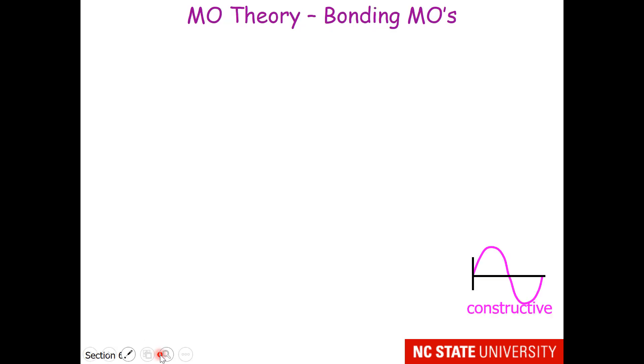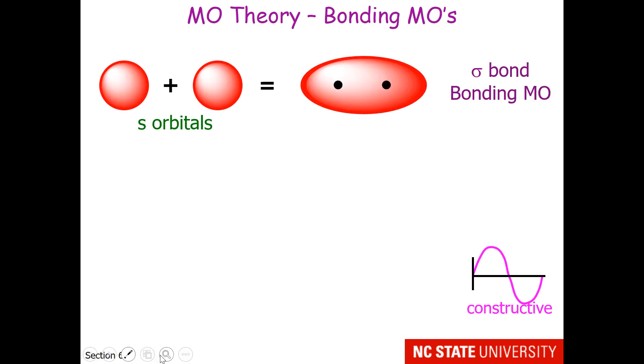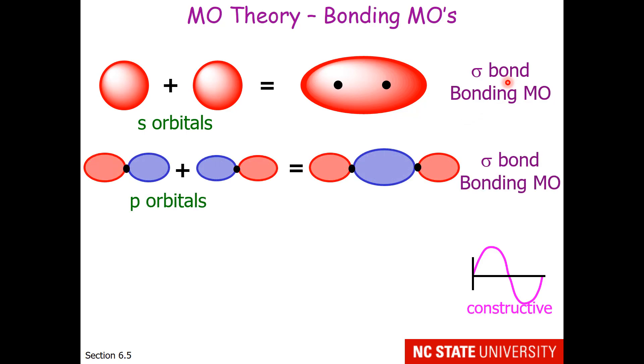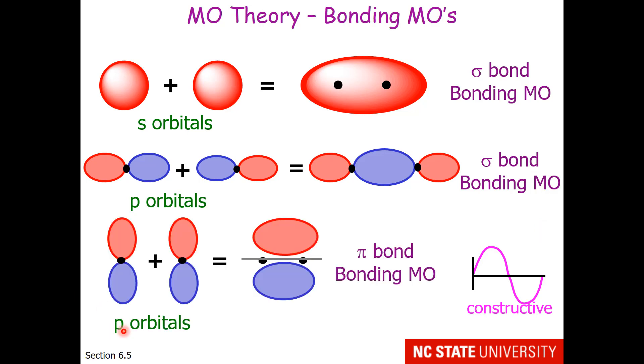First, we'll work on constructive interactions. When two s orbitals meet and the wave function is in the same phase, we get constructive interaction and a bonding molecular orbital. We call this a sigma bond. If p orbitals meet oriented in such a way that the two orbitals meeting are in the same phase, then once again we get constructive interaction, a bonding MO called a sigma bond. And if two p orbitals meet sideways such that the top region is in the same phase and the bottom region is in the same phase, then we get a pi bond.